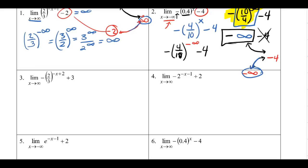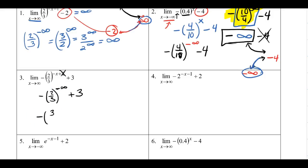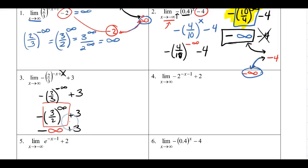For Example 3 analytically, with x approaching negative infinity, we plug in: -(2/3)^(-∞) + 2. Ignoring the +2 (adding a finite number to infinity doesn't matter), we apply the reciprocal property: -(3/2)^(+∞). Since 3/2 > 1, that term approaches infinity, so the negative makes it negative infinity. The +3 doesn't change the result — the answer is negative infinity.